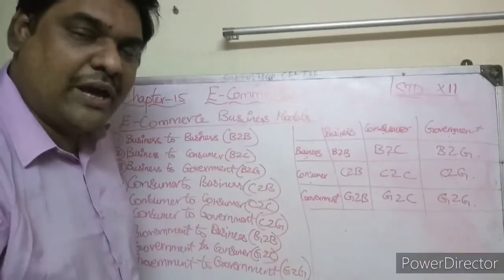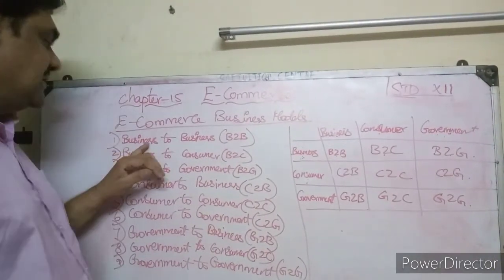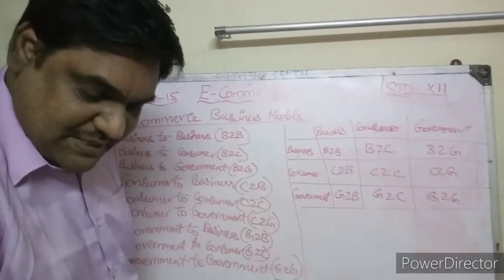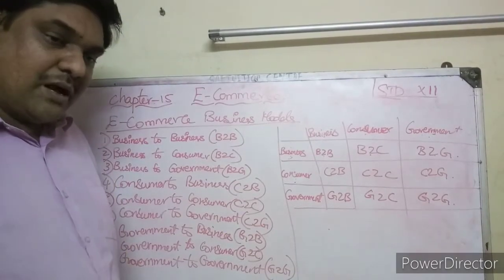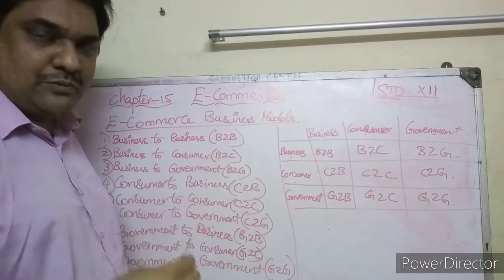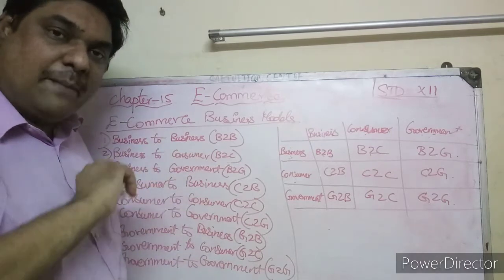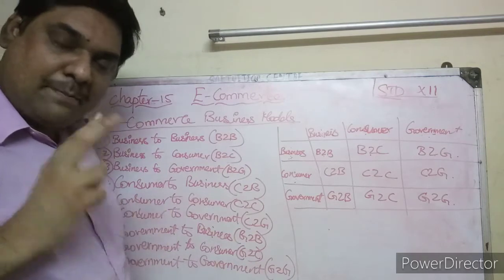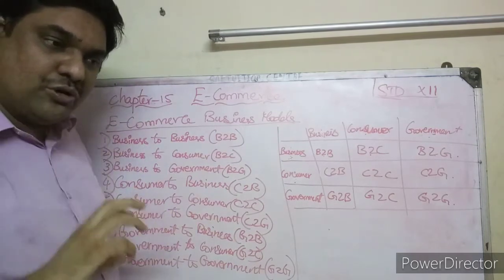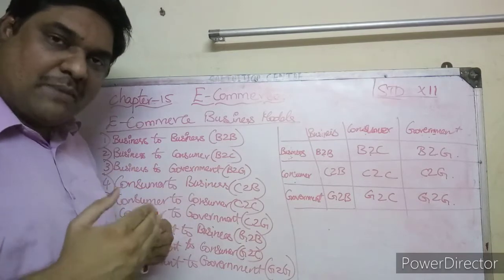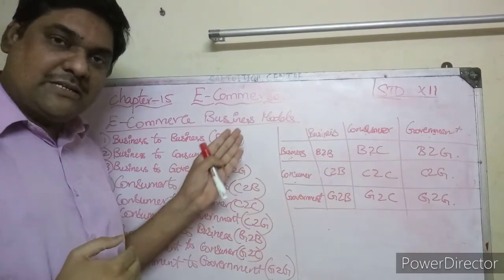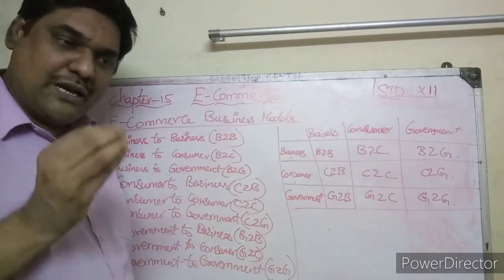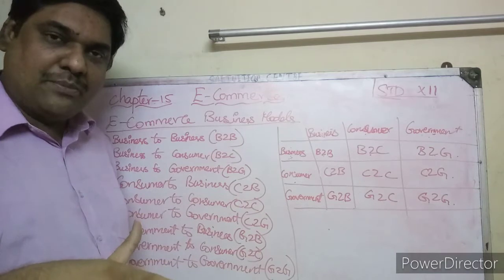So the first model is business to business. That is when one company uses a website to buy and sell products with another company through online. The buying and selling between two companies through online is called business to business.